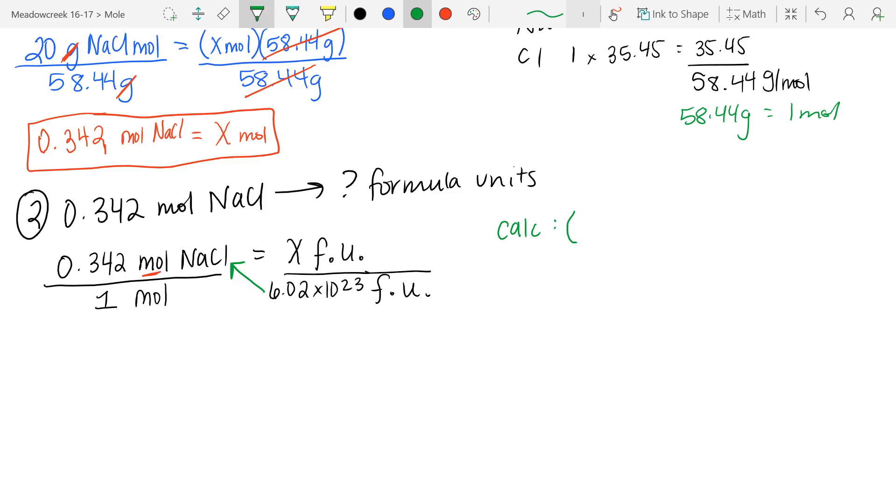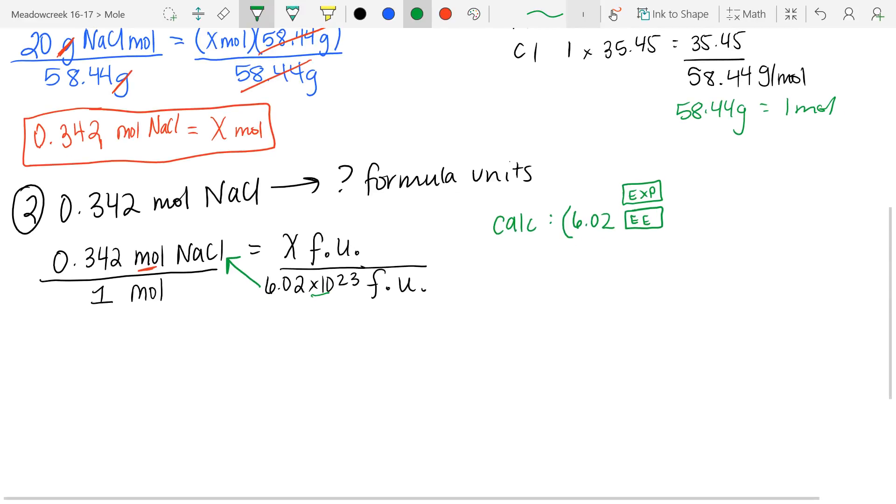you would put a parenthesis, because any time you have a number with an exponent, you want to make sure it's in parenthesis. You would put 6.02. There's a button on your calculator that has two capital Es, although some of your calculators may have exp for exponent instead. This essentially replaces the times 10 part right here. And then you would put the number 23, and we're going to multiply that by our 0.342.